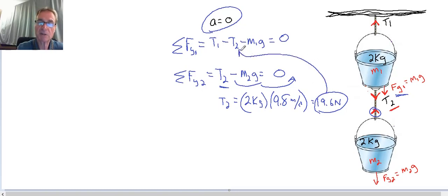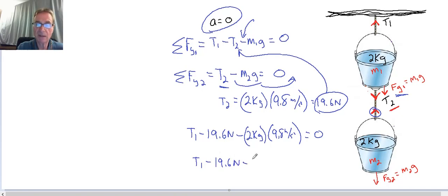Now I can substitute into the first equation. That gives me T1 minus 19.6 newtons, because T2 is 19.6 newtons but it's got a minus sign right there, minus M1 times G. M1 is 2 kilograms, G is 9.8 meters per second squared. We've already taken care of the negative sign here, so we don't have to stick another negative in for the 9.8. That equals 0. So now what I've got is T1 minus 19.6 newtons minus another 19.6 newtons equals 0. When I do this little bit of math here, I find that T1 is equal to 39.2 newtons.